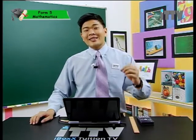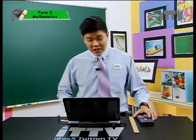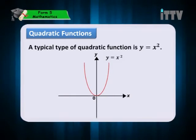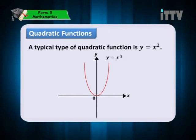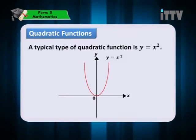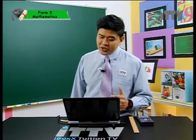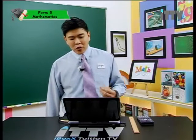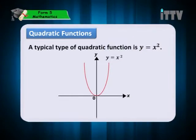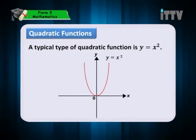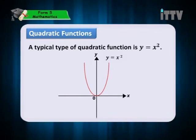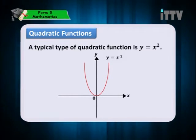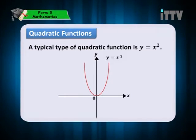The highest degree of x is 2 in a quadratic function. A typical type of quadratic function is y equals to x-square. This is one of the quadratic functions in the form of y equals to x-square, and its graph looks like this — it passes through the origin. So the x and y intercept is the origin.